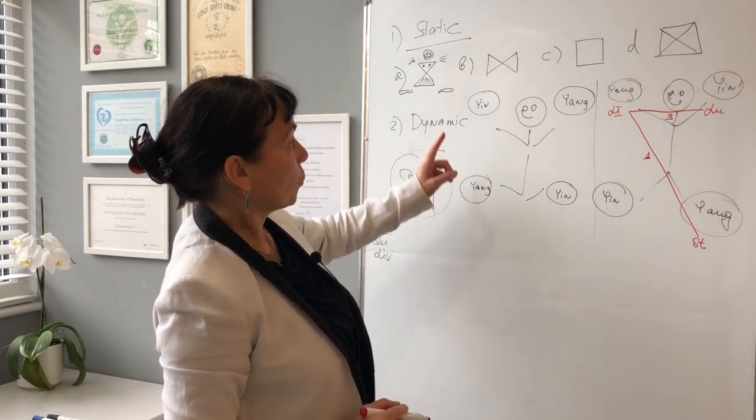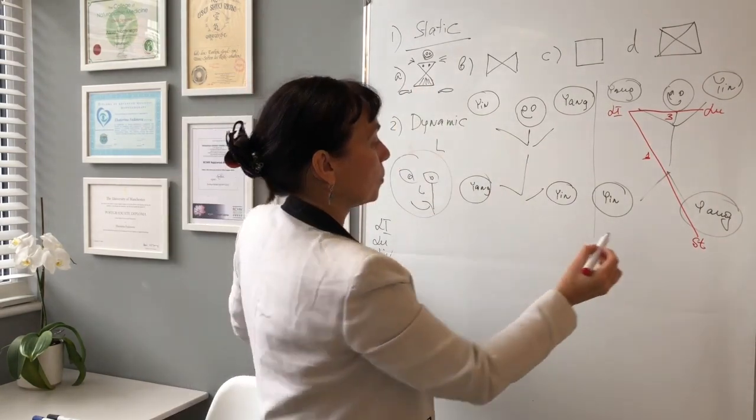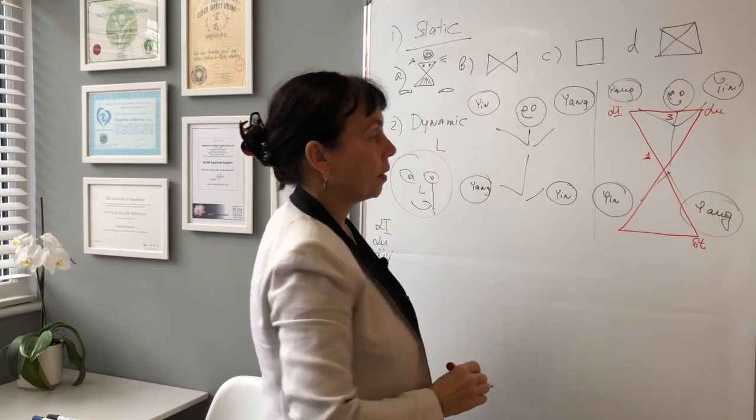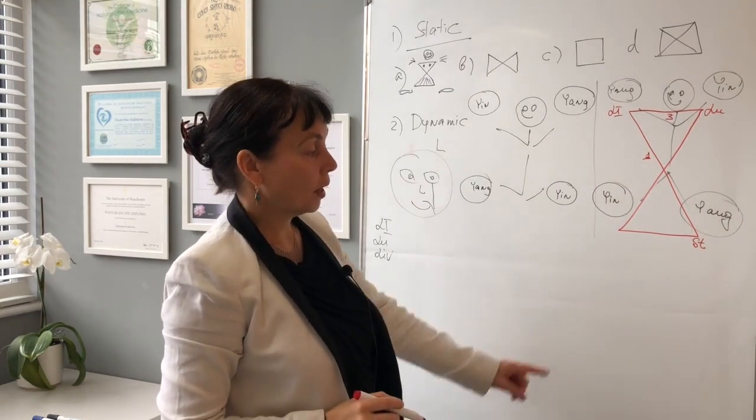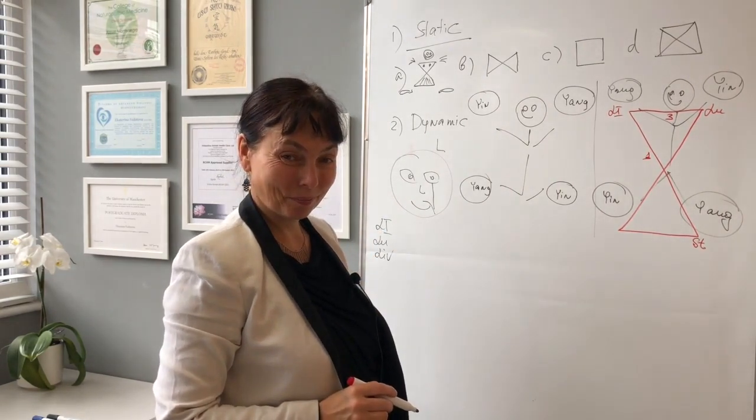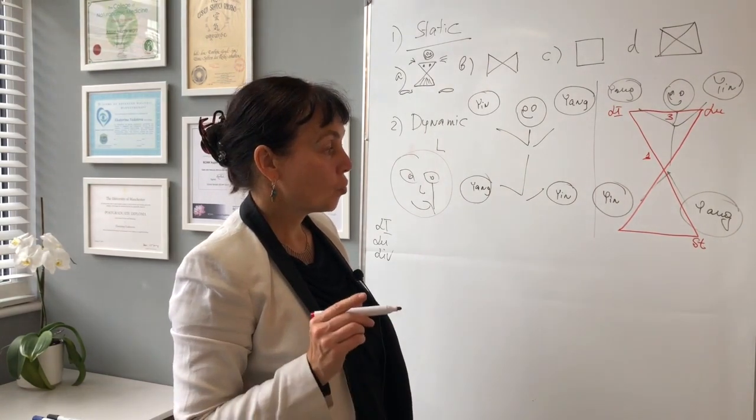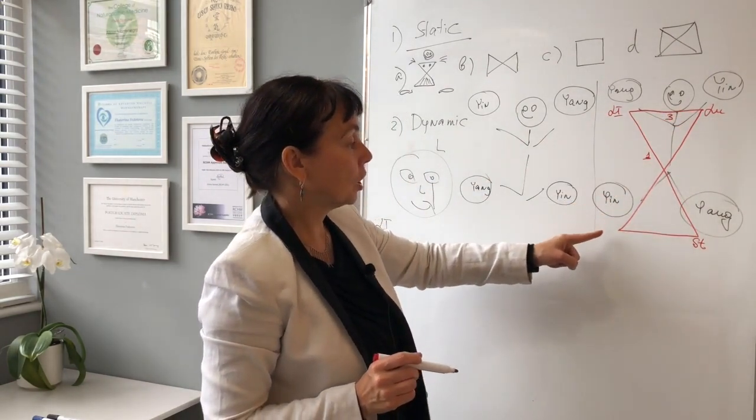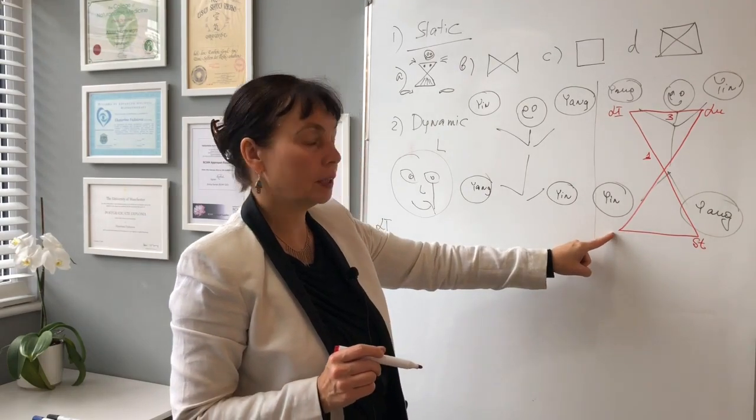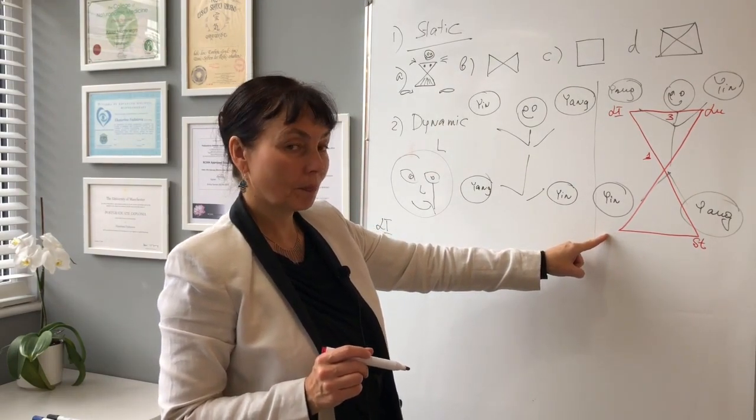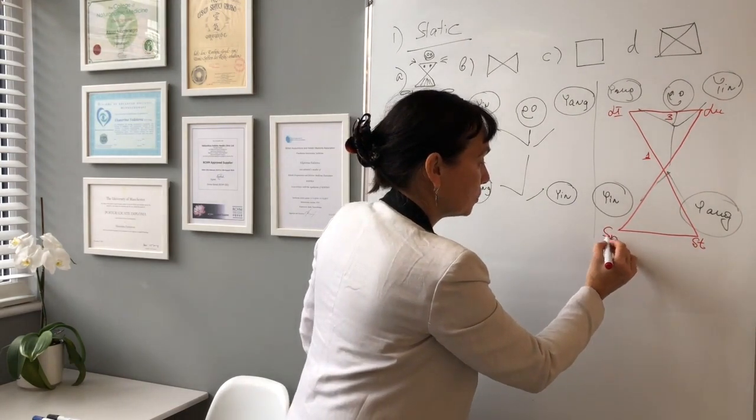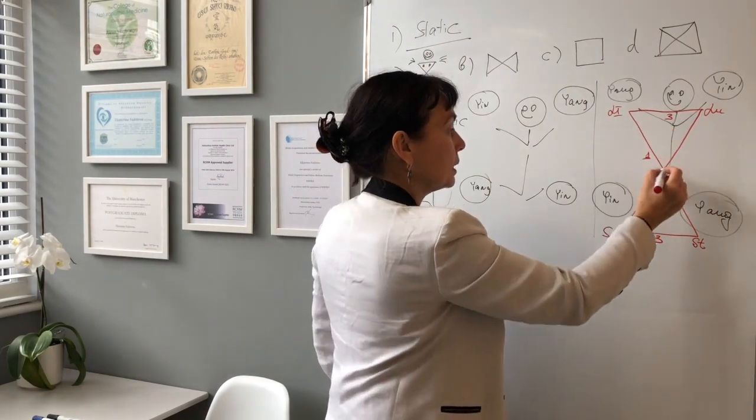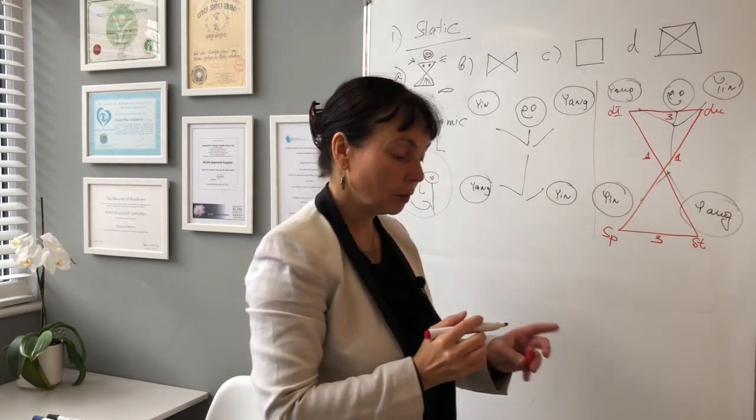So which structure we must draw? I think number, I think A. And now we missed just one channel. And the question is, which channel, which meridian will balance system three. That's lung and stomach. And that must be yin meridian at the same time. That will be spleen. Spleen will balance stomach according to system three and spleen and lung. This is tai yin. According to system one. They will balance each other.